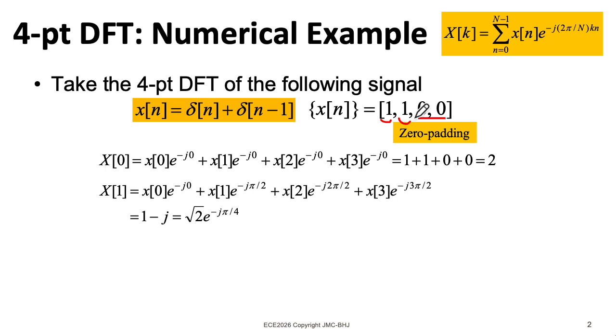x zero is one, and x one is one, so these are both one. e to the minus j zero is just one, and e to the minus j pi over two is minus j. And we generally convert this to polar form, so we have square root of two e to the minus j pi over four.